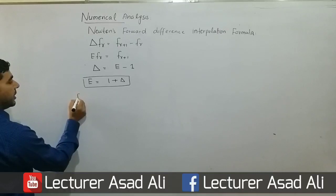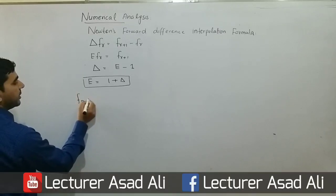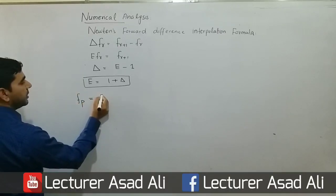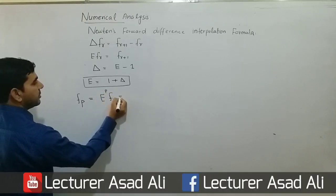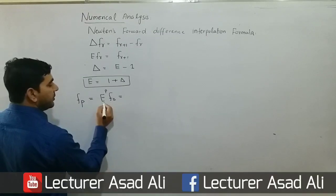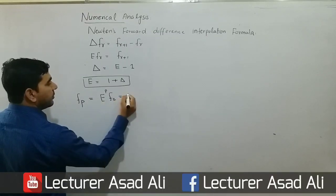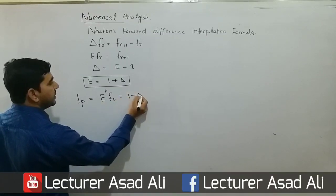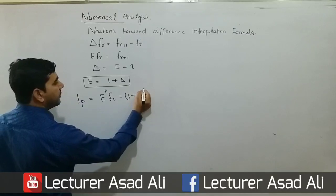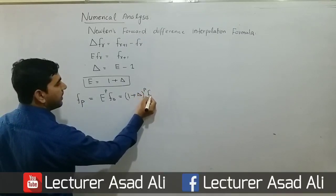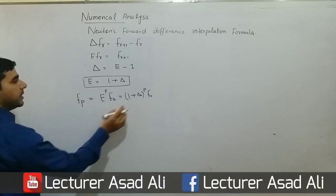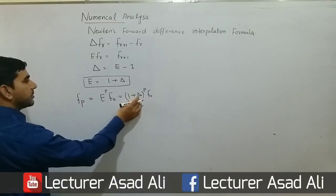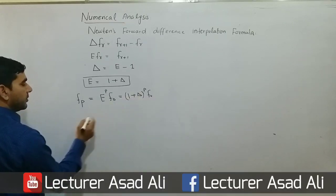We know that f(phi) = E^phi * f(0), which equals (1 + delta)^phi * f(0). We can expand these terms using the binomial series.